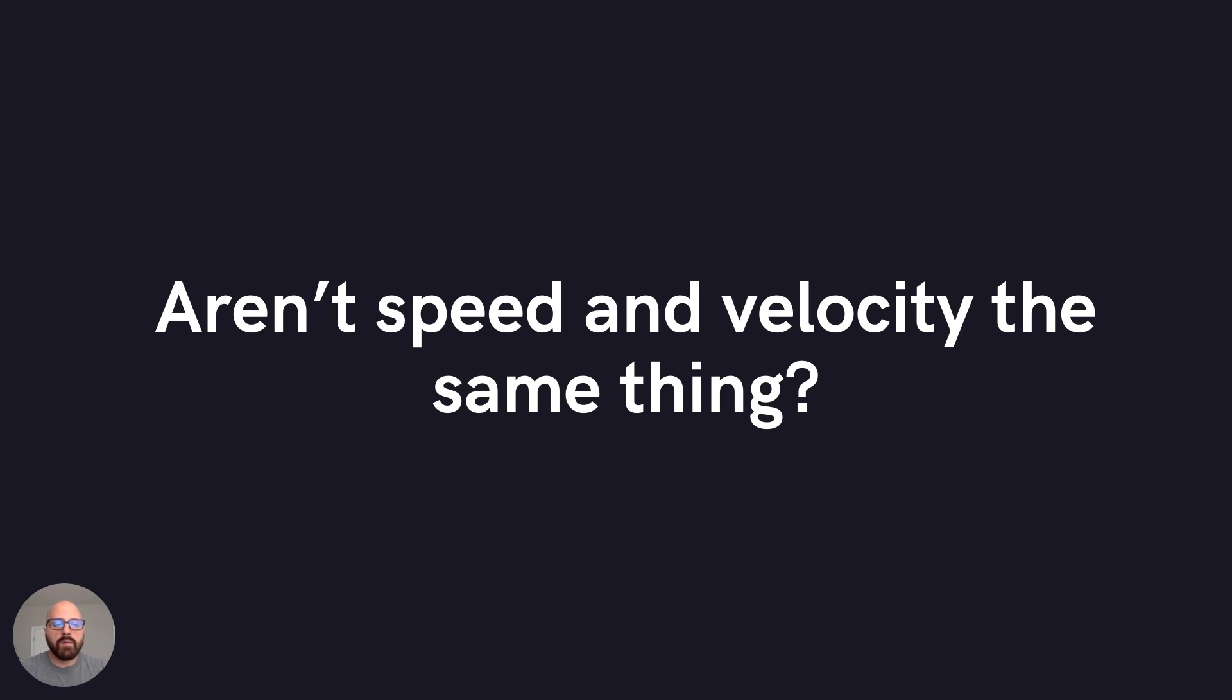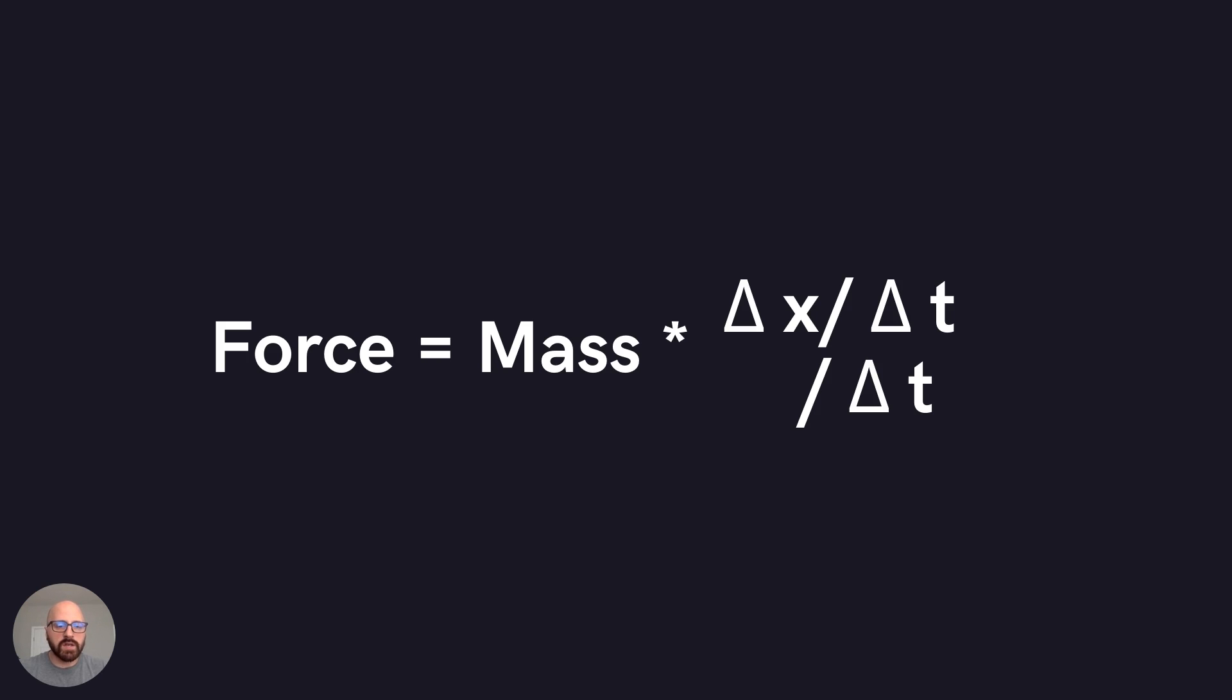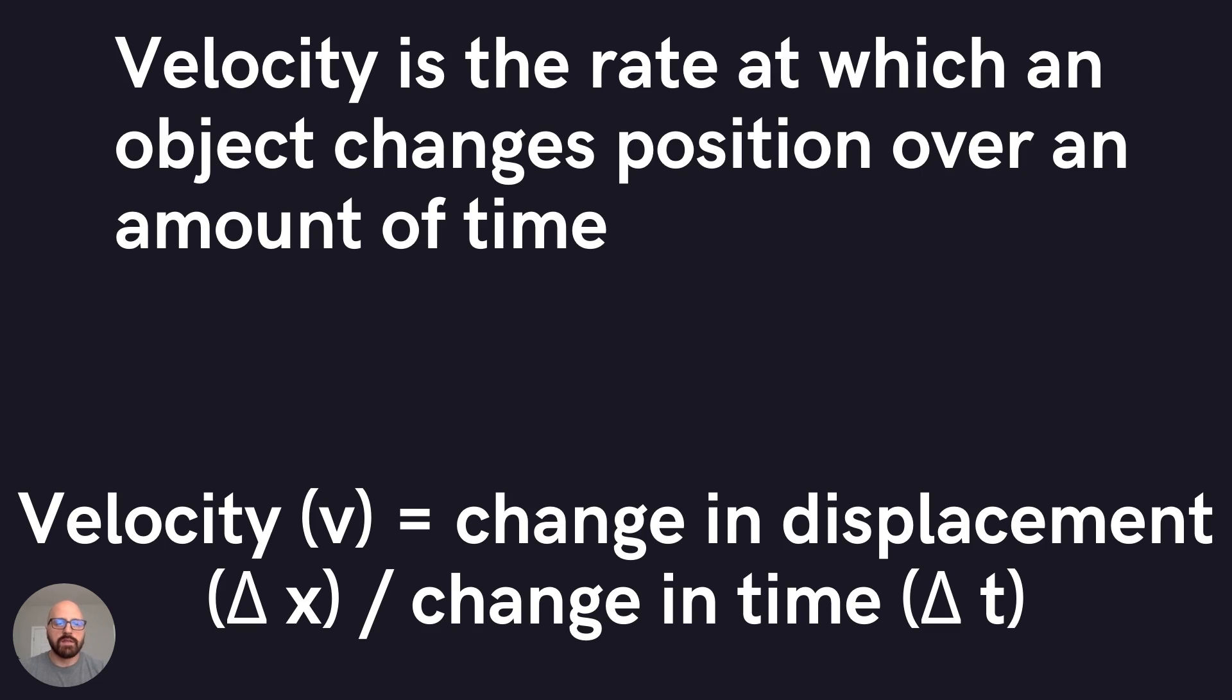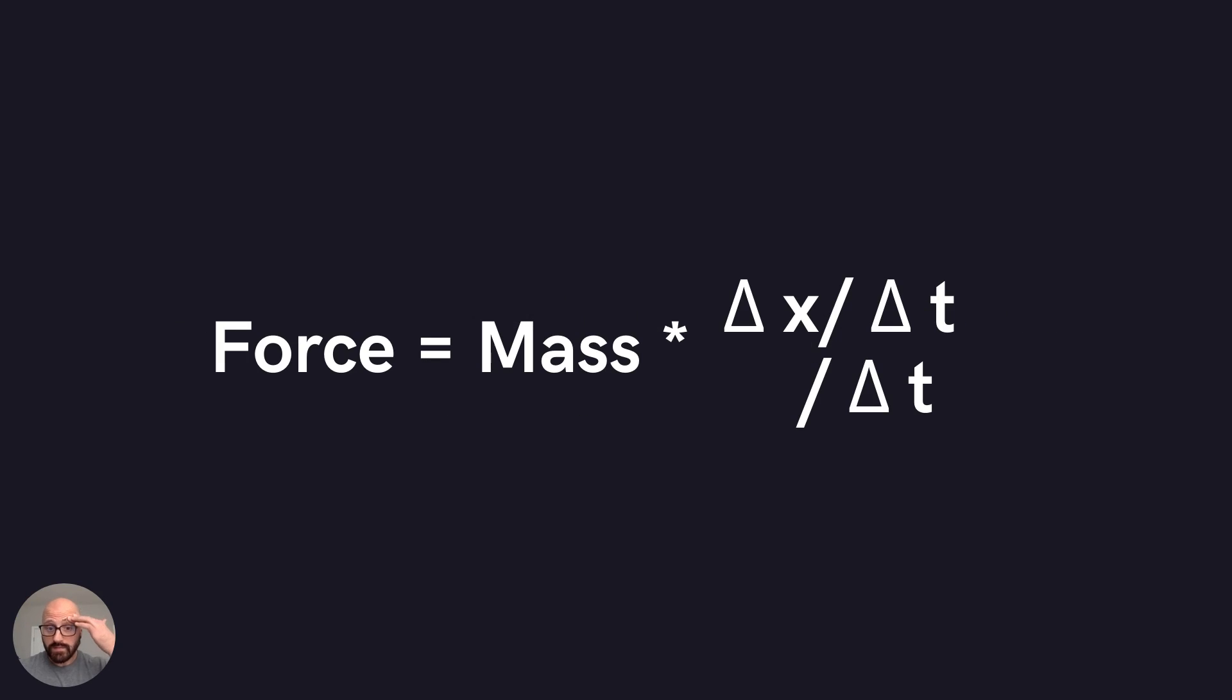So now if we go back to the equation. So acceleration was change in velocity over change in time. So that's what this change in X over change in T is. It's the velocity equation. So now if you want to increase an athlete's velocity, you either have to increase the time over which force is applied or the amount of force produced in that given time. So I'll say that again. If you want to increase an athlete's velocity, you either increase the time over which force is applied or the amount of force produced in a given time.